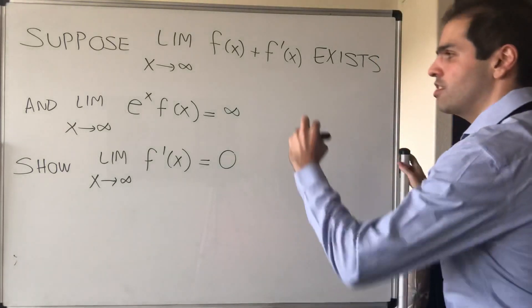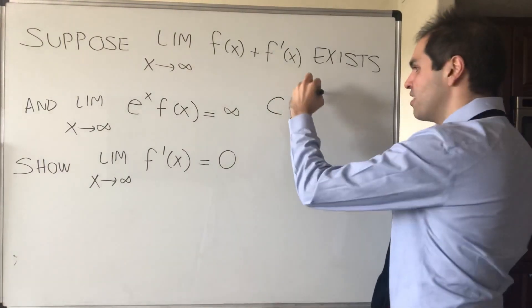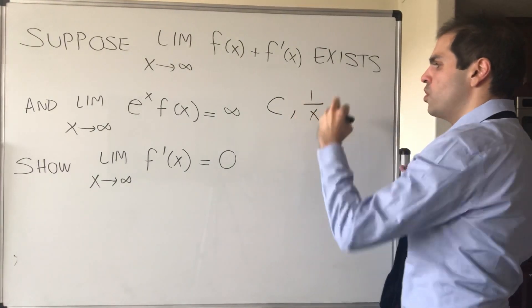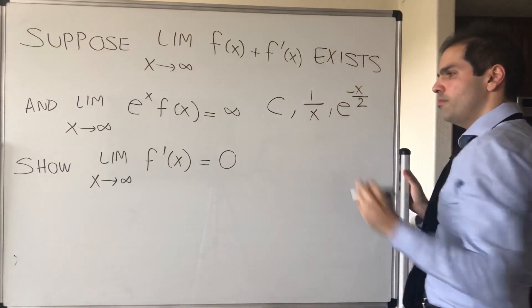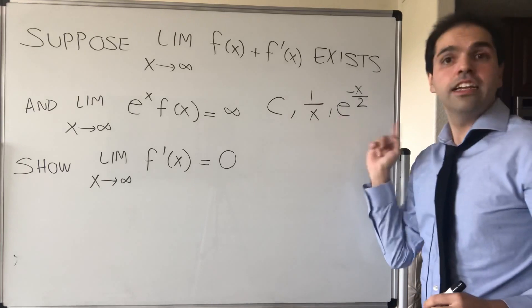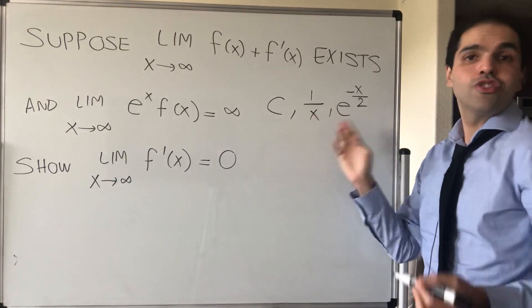And it turns out there are many functions that satisfy this criterion. For instance, constant functions, that works, or 1 over x, that also works, and even, I believe, e to the minus x over 2. And notice that in all those examples, the derivative of the function goes to zero.